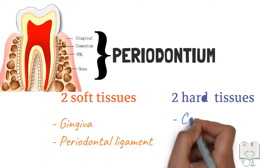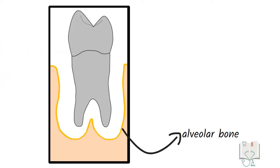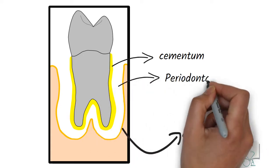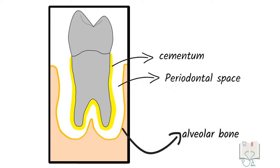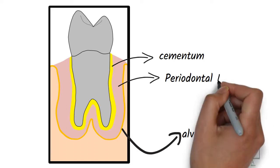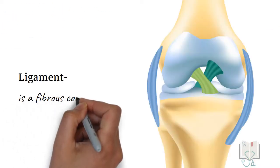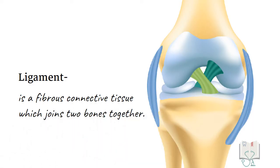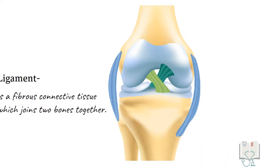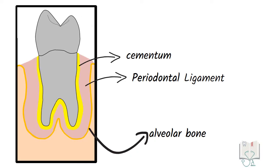Gingiva, periodontal ligament, cementum and alveolar bone. The space between the alveolar bone proper or the bony socket and the cementum is the periodontal space. This space is filled by a ligament called periodontal ligament. A ligament by definition is a fibrous connective tissue which joins two bones together. Periodontal ligament is the only ligament connecting a tooth to a bone.